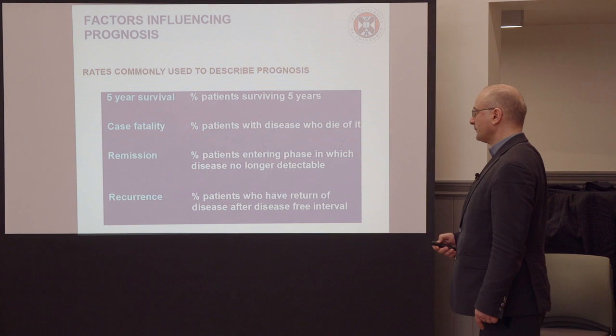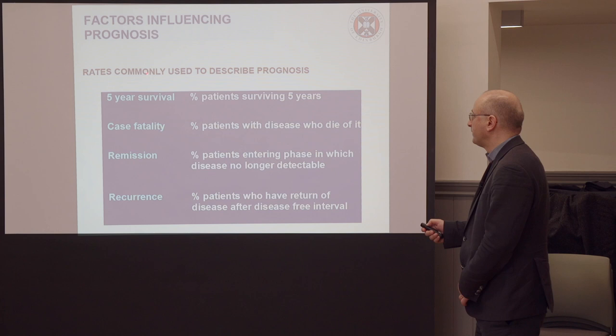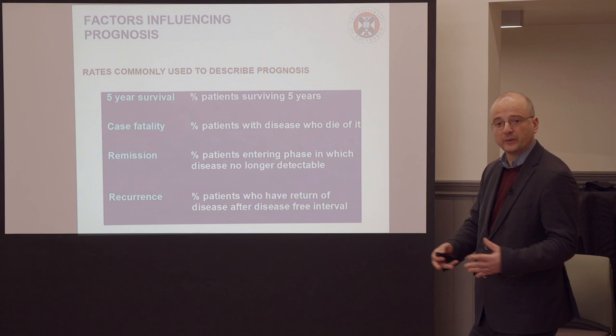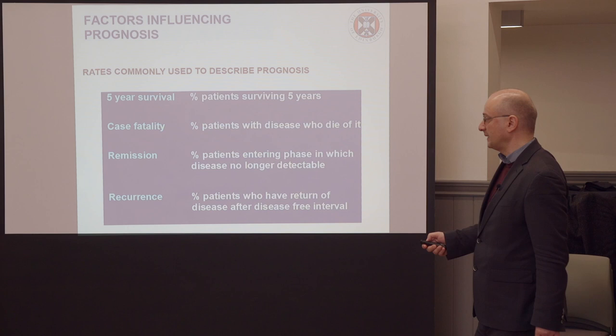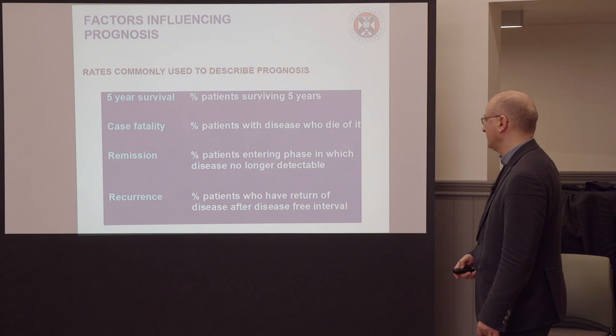What are the rates we commonly use to describe prognosis? Five-year survival is a very good one — the proportion of patients that survive five years following the onset of disease. Case fatality is the proportion of patients with disease who actually die of it. Remission is the proportion of patients entering the phase in which disease is no longer detectable, and recurrence is the proportion of patients who have return of disease after a disease-free interval.